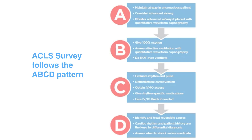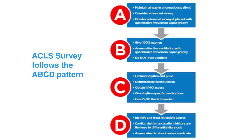The ACLS survey follows the ABCD pattern, in which you check for airway, breathing, circulation, and differential diagnosis. Refer to Figure 21 in your corresponding ACLS manual for further learning about the ACLS survey.